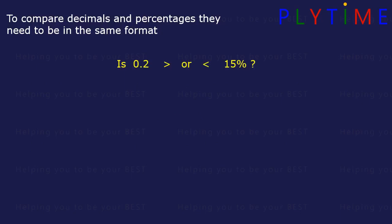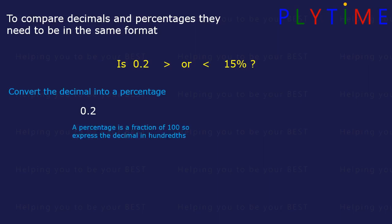Is 0.2 greater than or less than 15%? Let's convert the decimal into a percentage. A percentage is a fraction of 100, so express the decimal in hundredths. 0.2 is the same as 20 hundredths, or 20 over 100. That's the same as 20%.